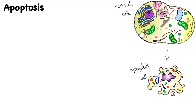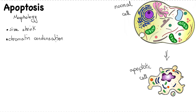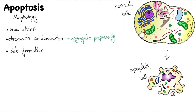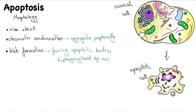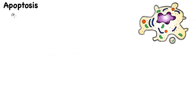Let's take a look at the morphology of an apoptotic cell. An apoptotic cell shrinks in size, as opposed to other forms of cell injury in which cells swell. Chromatin condensation is the most characteristic feature of apoptosis — chromatin aggregates peripherally under the nuclear membrane. Apoptotic cells also form blebs, which then fragment and form apoptotic bodies. Apoptotic bodies are then phagocytosed by macrophages.